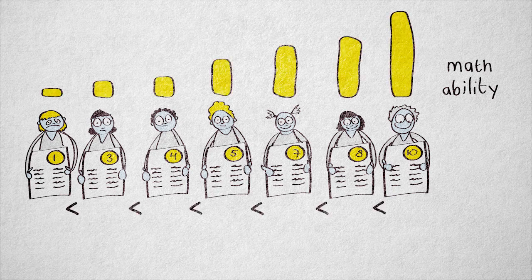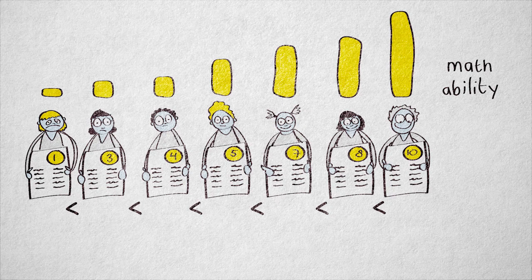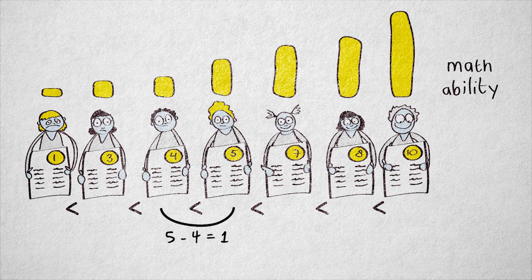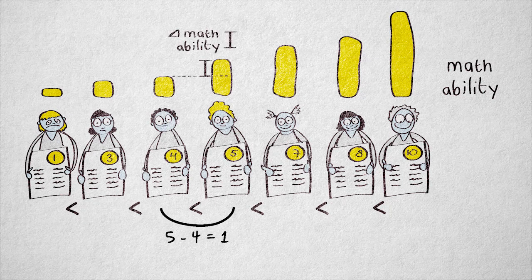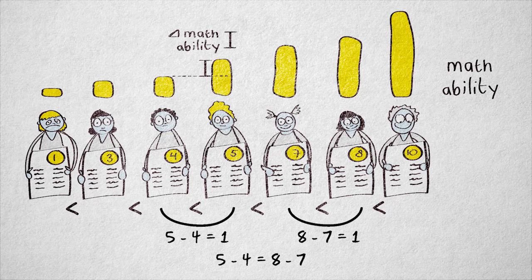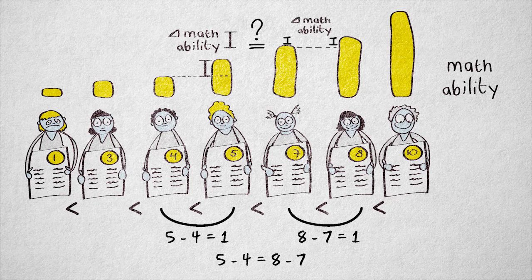But differences or ratios of scores don't reflect differences or ratios of math ability. We have no way of showing that the difference between a score of 4 and 5 is the same in terms of math ability as the difference between a score of 7 and 8. Sure, the difference in right answers is the same. But how can we show this corresponds to an equal difference in math ability? We can't.